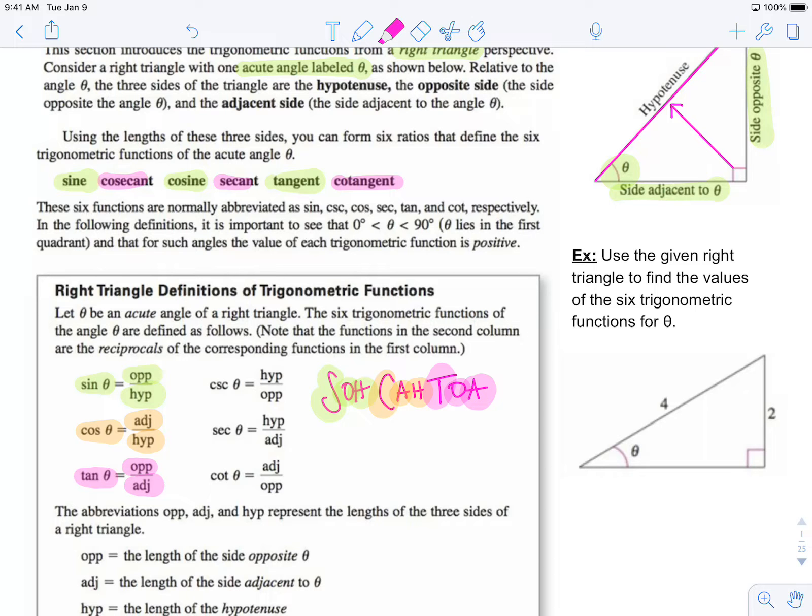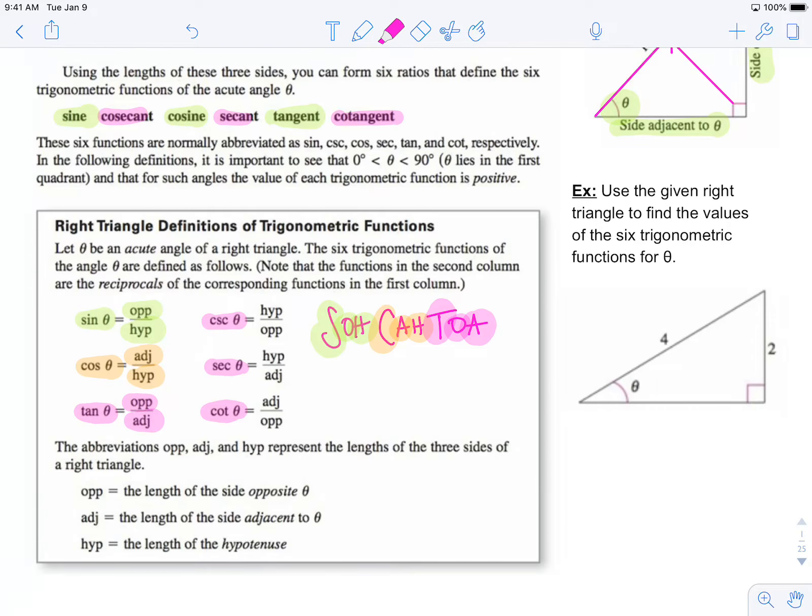We know that cosecant is the reciprocal of sine, secant is the reciprocal of cosine, and cotangent is the reciprocal of tangent. We will find the six trig functions for this triangle on the right in the next video.